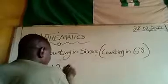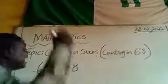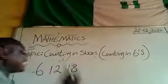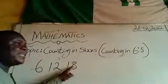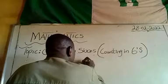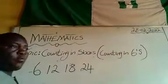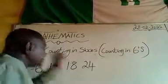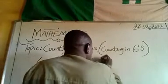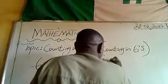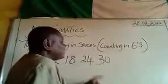the answer is eighteen. When I add six to this eighteen, the answer is twenty-four. When I add six to this twenty-four, the answer is thirty.